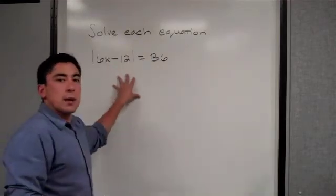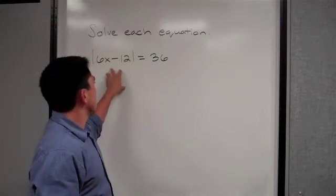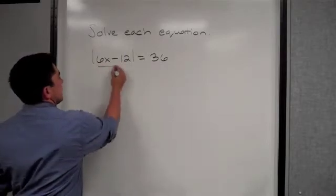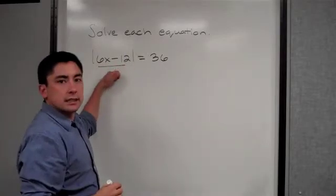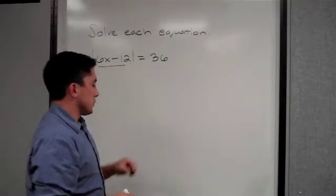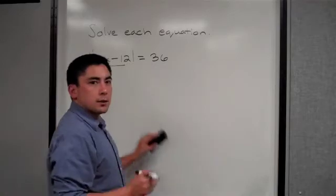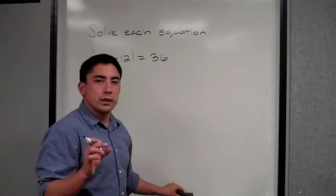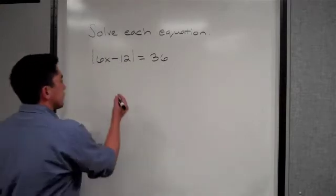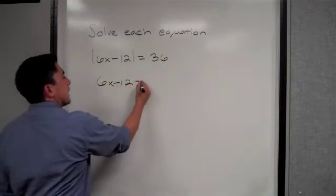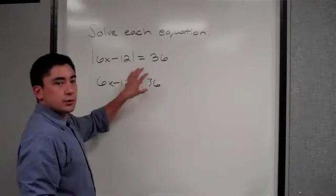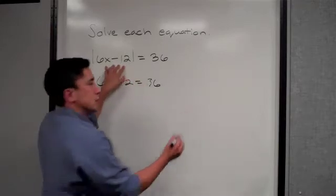The first one had to do with absolute value — how do we solve for x if we have an absolute value. What you have to remember is that what's on the inside, if that's equal to 36, the absolute value will be 36, but it can also equal negative 36. I'm going to show you a slightly easier way today. You set it up exactly how it is but without the absolute value bars, so the positive version can equal 36, but the inside could also equal negative 36.